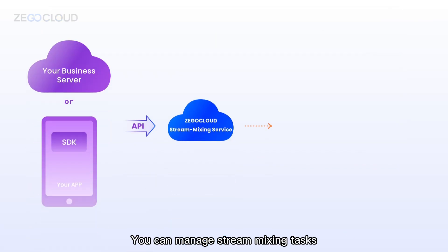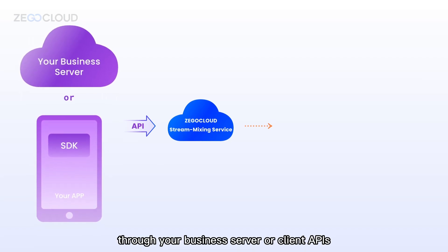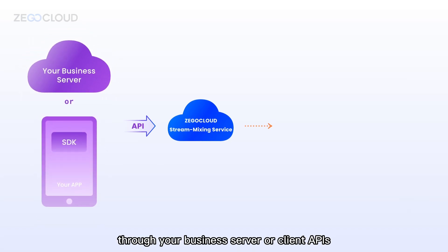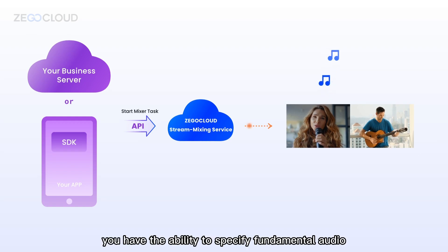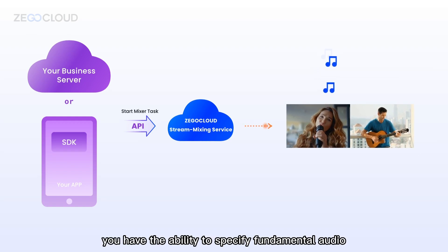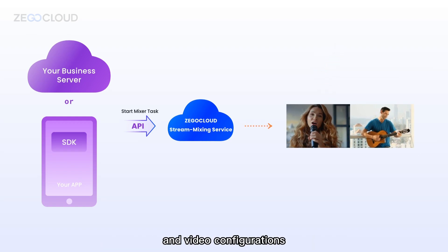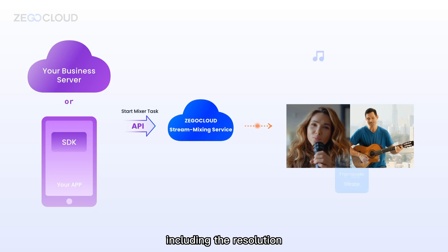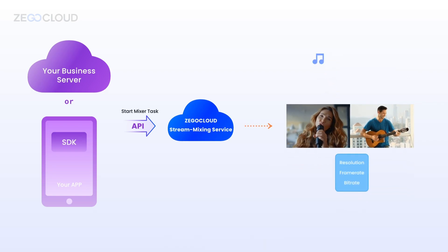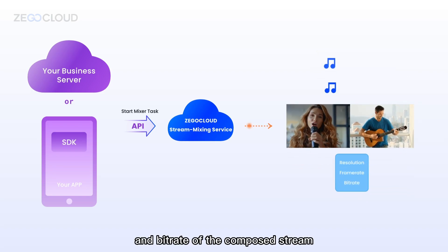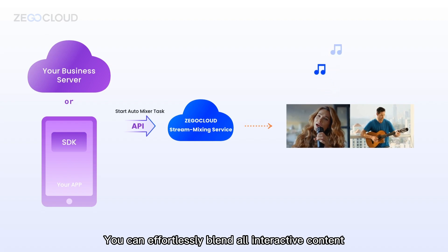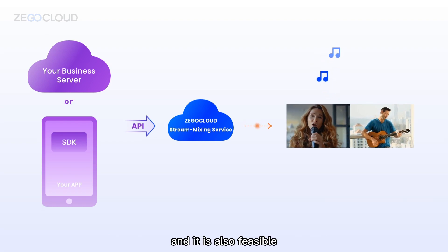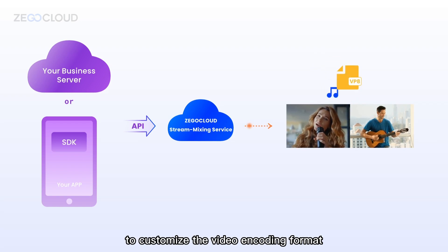You can manage stream mixing tasks through your business server or client APIs. When initiating stream mixing, you have the ability to specify fundamental audio and video configurations, including the resolution, frame rate, and bitrate of the composed stream. You can effortlessly blend all interactive content within the room, and it is also feasible to customize the video encoding format.